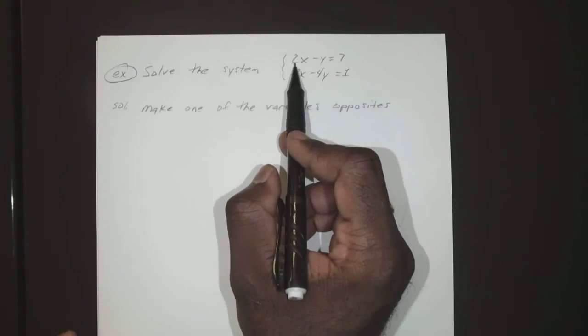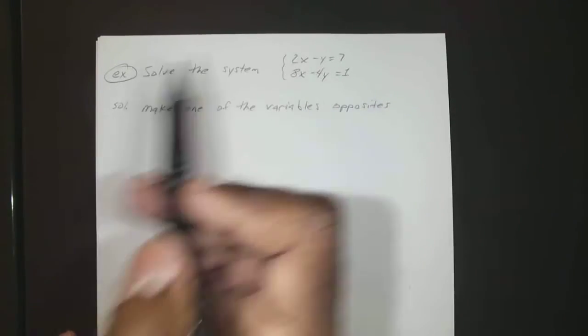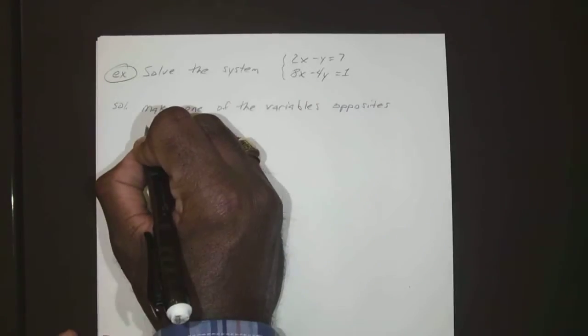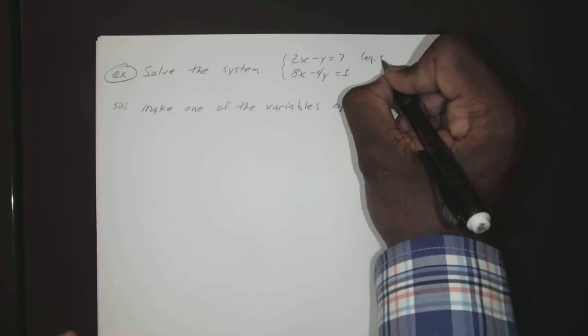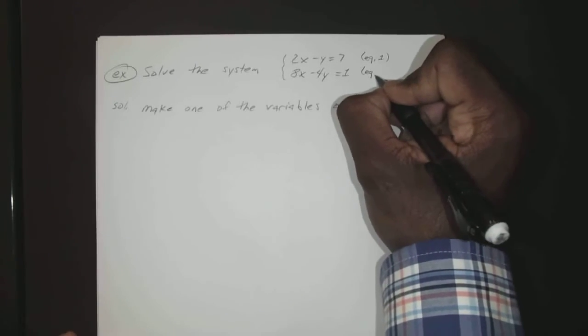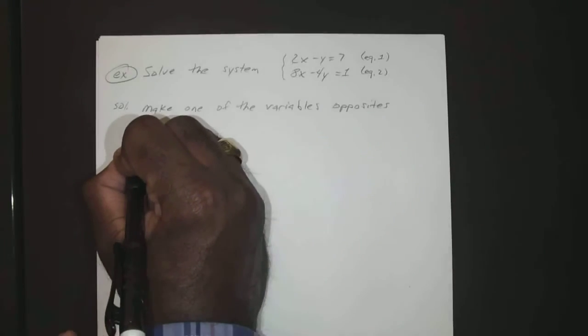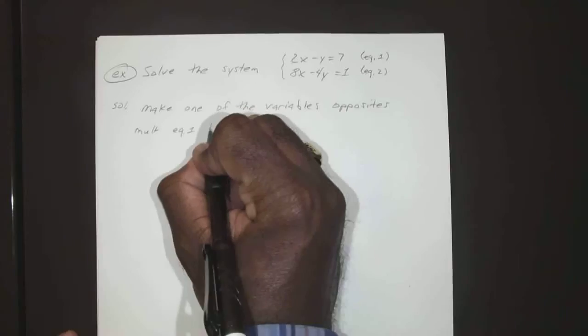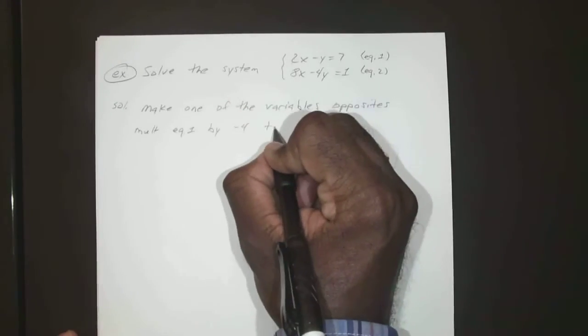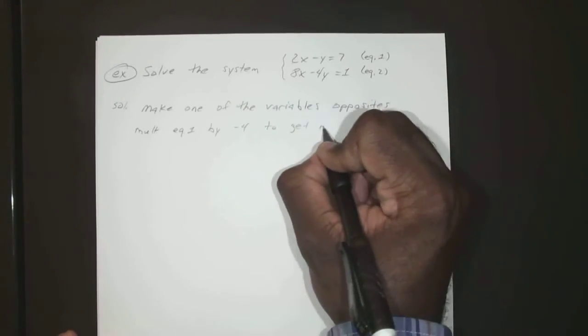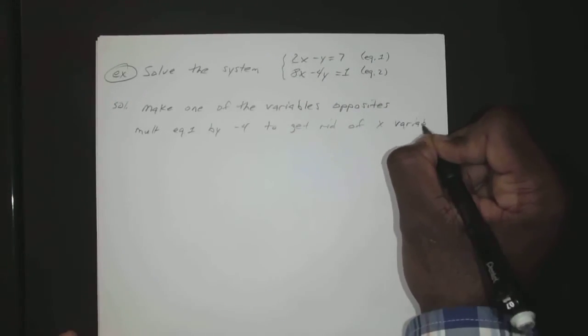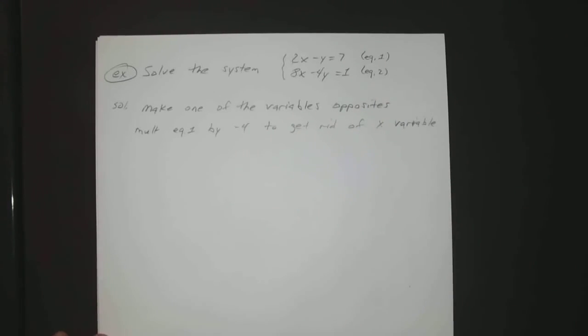We don't have to worry about step one because it's already in standard form. Okay, so we'll get rid of the x, so we'll multiply the first equation by -4. That'll give us -8 and 8. We'll multiply equation 1 by -4 to get rid of the x variable.